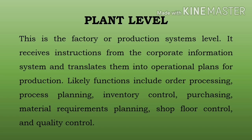Next: plant level. This is the factory or production system level. It receives instructions from the corporate information system and translates them into operational plans for production. Yeh corporate information system se instructions ko receive karta hai aur isko production ke liye operation plan mein translate karta hai.